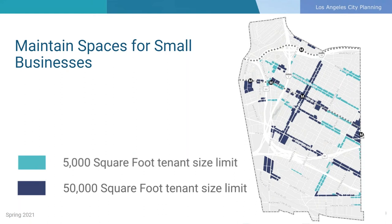To reflect the existing pattern of small business, the size is limited to 5,000 square feet on corridors such as Cesar Chavez and Wabash Avenue, shown here in the lighter blue turquoise color. On corridors such as Soto Street and Whittier Boulevard, shown in dark blue, the zoning will limit new commercial establishments to 50,000 square feet. Limiting new tenant sizes requires new development to provide smaller and therefore more affordable commercial spaces for business, and limits the combination of existing small business space into larger spaces for big box and chain stores, helping to maintain the existing small businesses in the community.